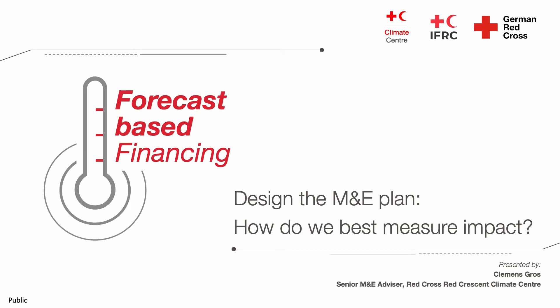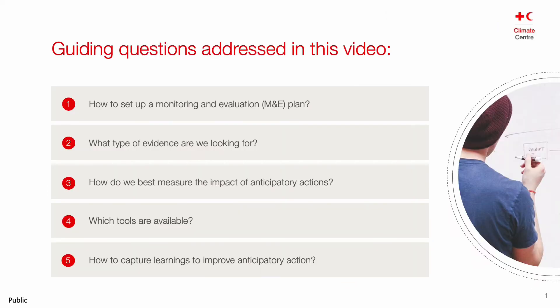Welcome to this short video on the forecast-based financing manual chapter: Designing the Monitoring and Evaluation Plan, which covers a recommended approach for measuring the effectiveness and impact of anticipatory humanitarian action. This video addresses five guiding questions: how to set up a monitoring and evaluation plan for anticipatory action, what type of evidence we are looking for, how we best measure the impact of anticipatory actions, which tools and templates are available, and how we capture learnings to improve anticipatory action.